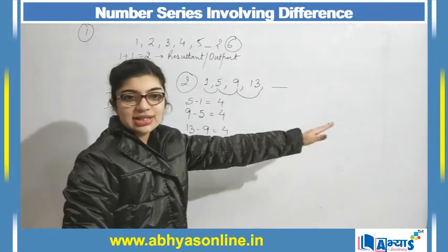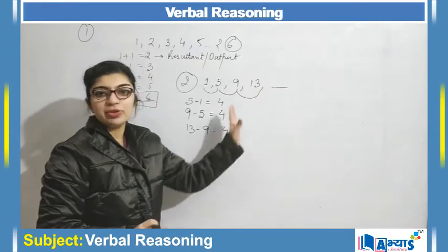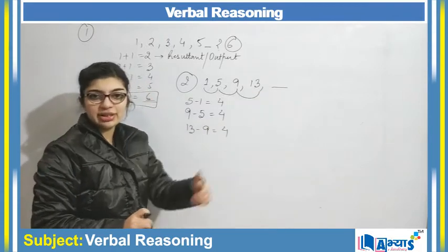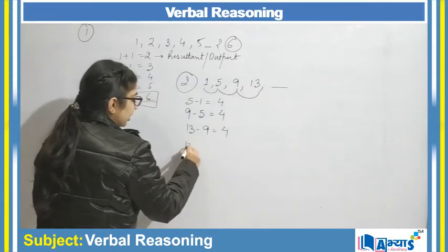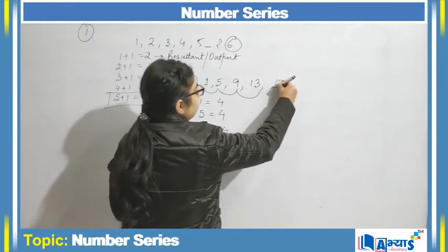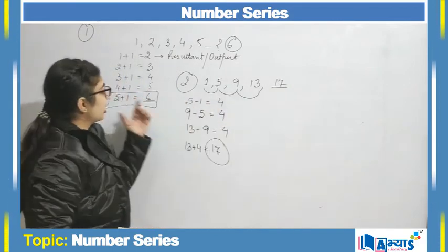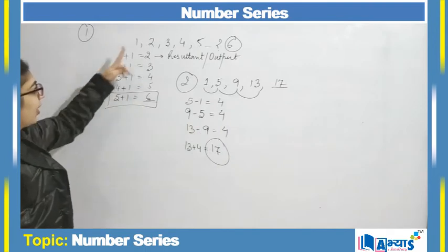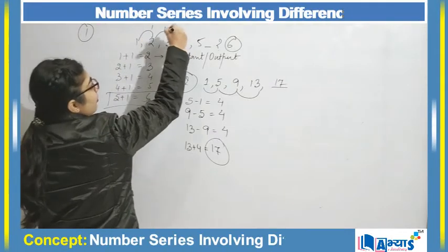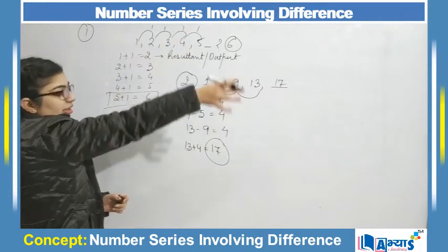The pattern is that the difference between each consecutive term is 4. So in the next term the difference is also 4, meaning the next number is bigger than the previous by 4. Therefore 13 + 4 = 17, and so 17 will be the required term. The resultant difference was 1 in the first example and 4 in this example.